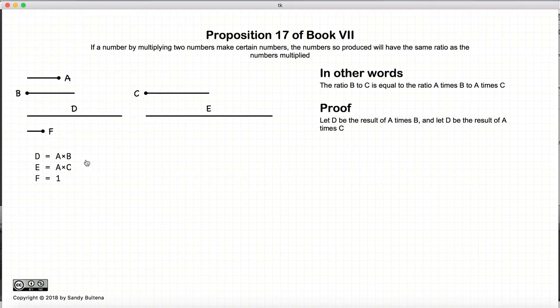So let's look at this. Now, we're starting with D equals A times B, and E equals A times C, and our unit is going to be the length F.